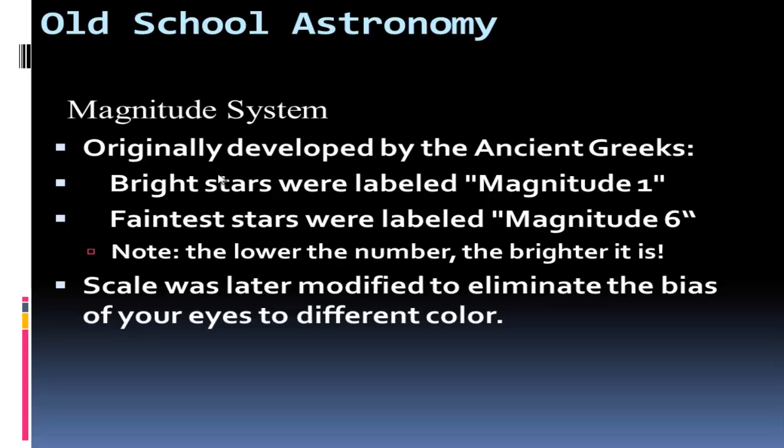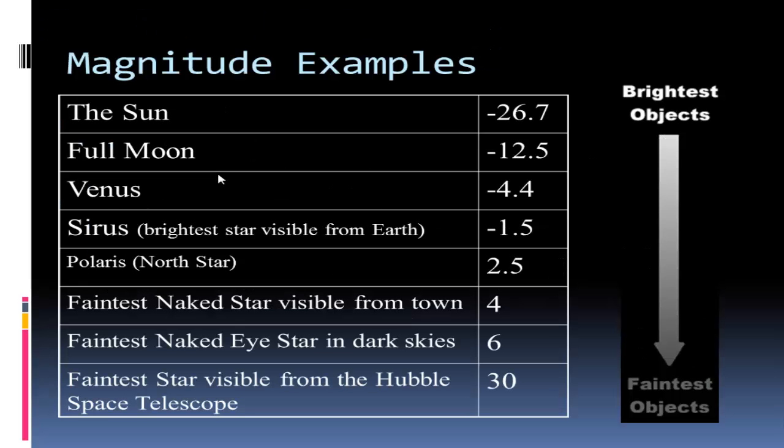Let me give you a few examples of the current magnitude system. Since the Sun is so close to us, it's obviously the brightest star in the sky and would have a magnitude of negative 26.7. You can go into the negatives. The full moon's bright, Venus can be extremely bright also, but the brightest star in the sky to us is Sirius, the dog star, at negative 1.5.